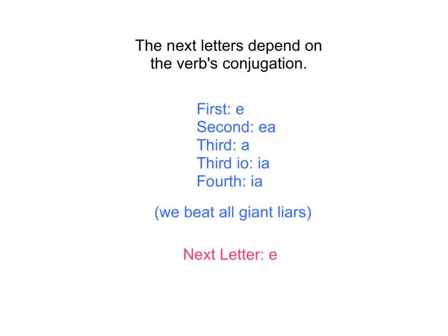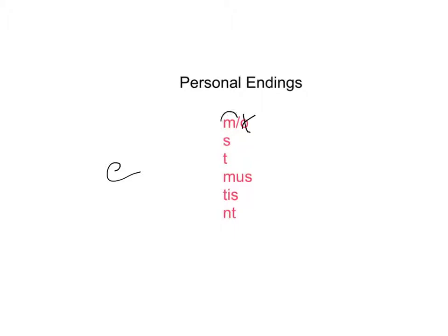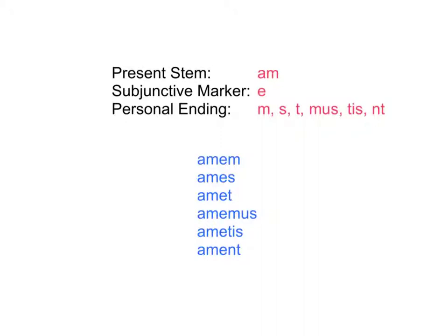So, since we chose a first conjugation verb, we'll take the letter E. Next, we'll add the active personal endings: M or O, S, T, mus, tis, nt. And because we're going to have the letter E in front of it, we're not going to use O — we're going to use M. Let's put this all together. We have AM, followed by E, followed by M, S, T, mus, tis, nt. Simple: amem, ames, amet, amemus, ametis, ament.